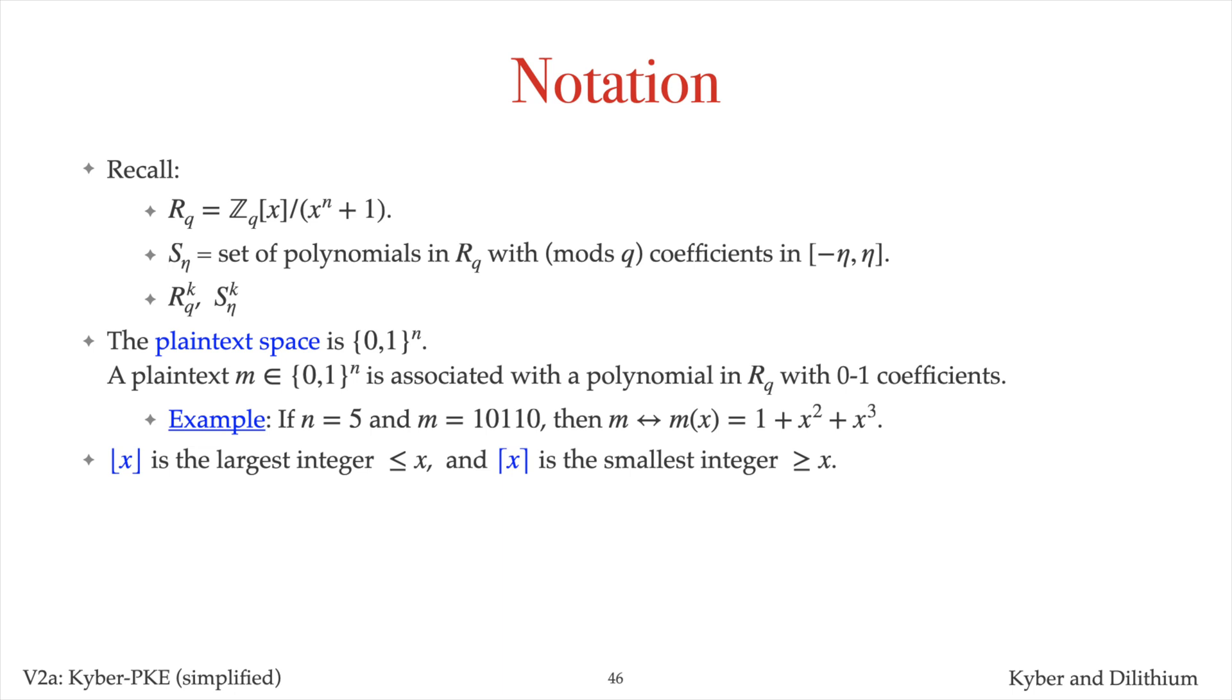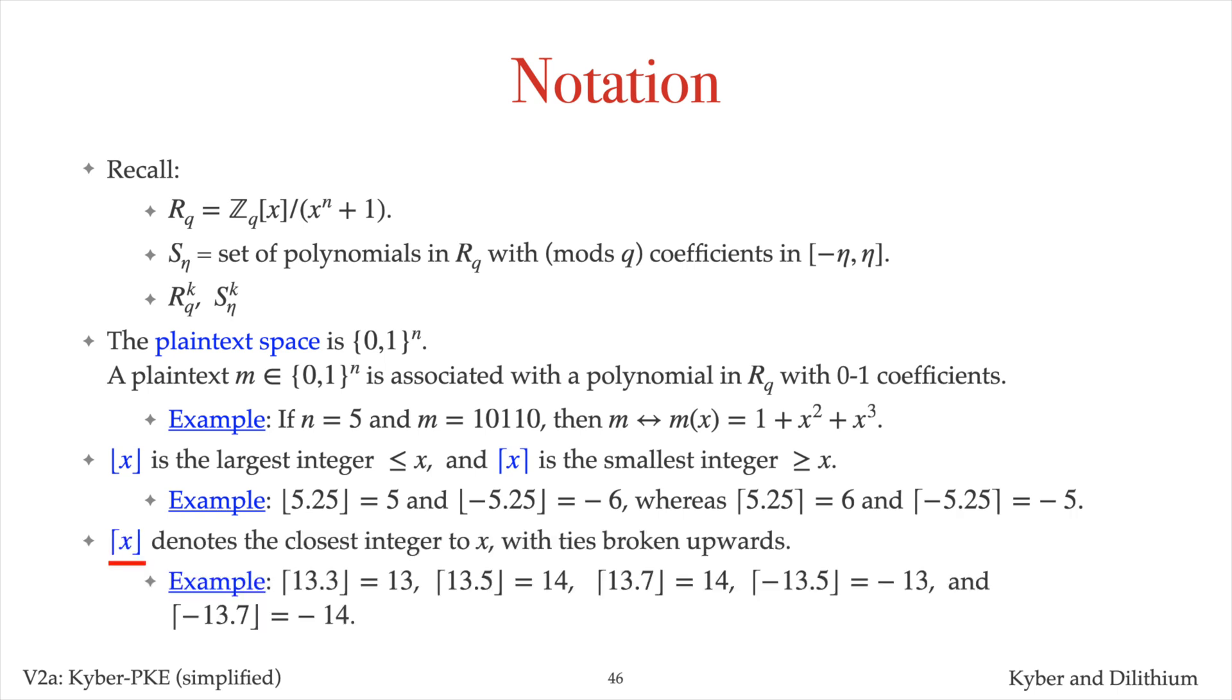The floor of an integer x is the largest integer at most equal to x, and the ceiling of an integer x is the smallest integer at least equal to x. For example, the floor of 5.25 is 5, the floor of minus 5.25 is minus 6, the ceiling of 5.25 is 6, and the ceiling of minus 5.25 is minus 5. This notation denotes the closest integer to x, with ties broken upwards.